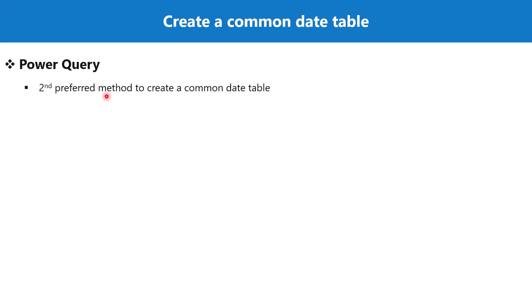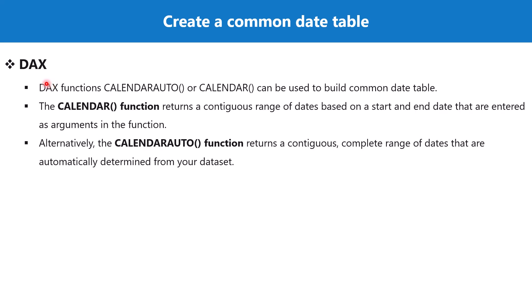Here in this video we are going to use a commonly available date script that has already been shared. We will run that script, which is written in M language, to create a date table. The beauty of this script is that it allows you to provide any starting and ending date and creates the date table accordingly. The third option — through DAX — we will explore when covering the DAX videos. As I said, this is the least preferred option.